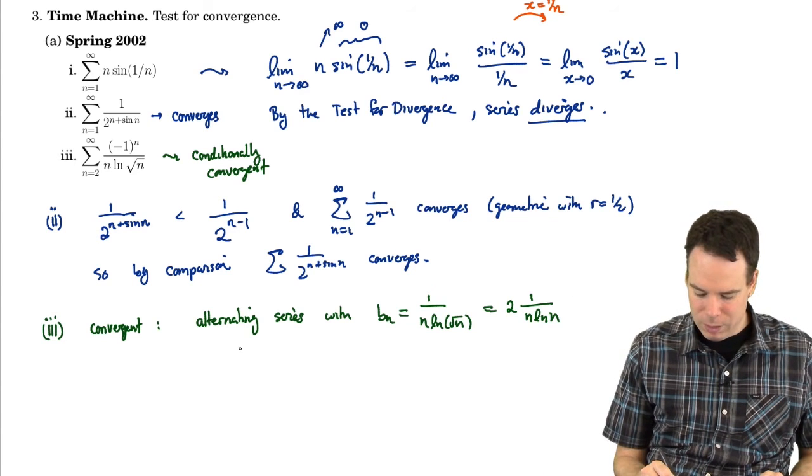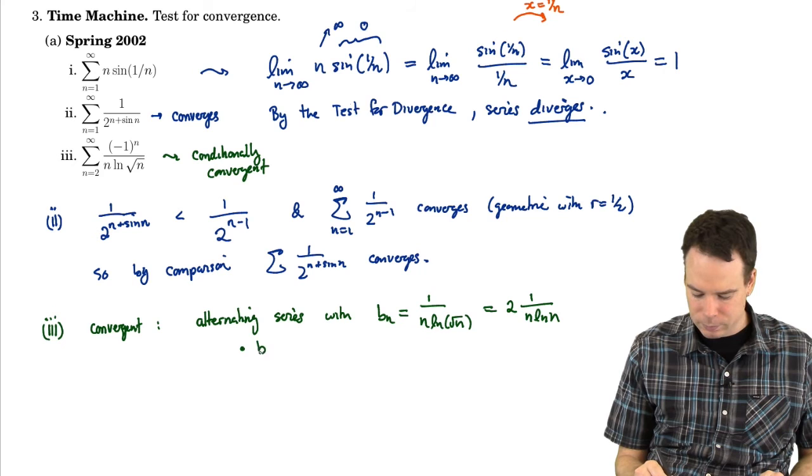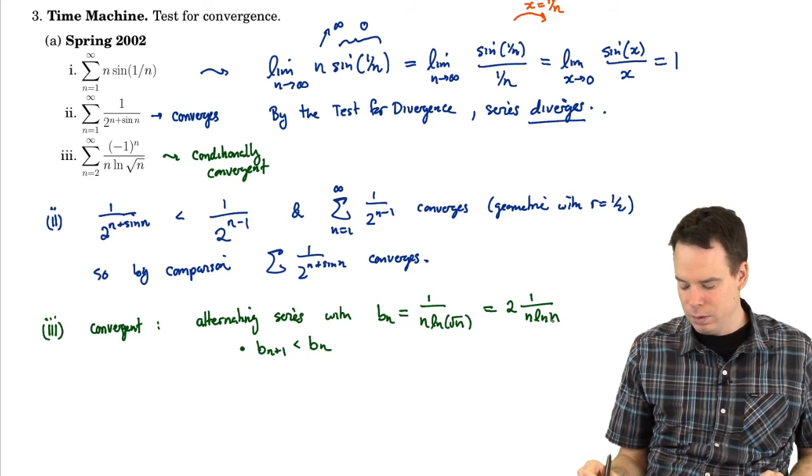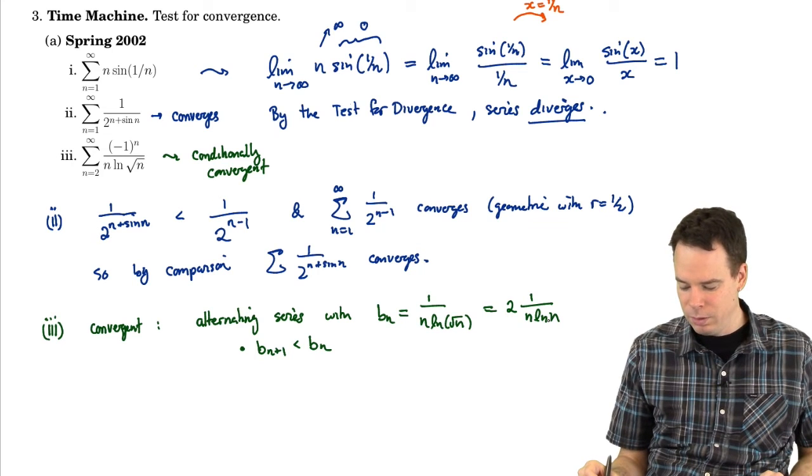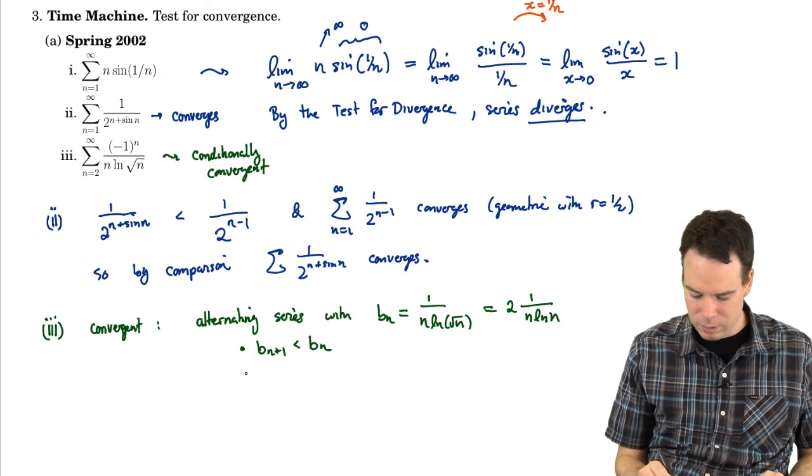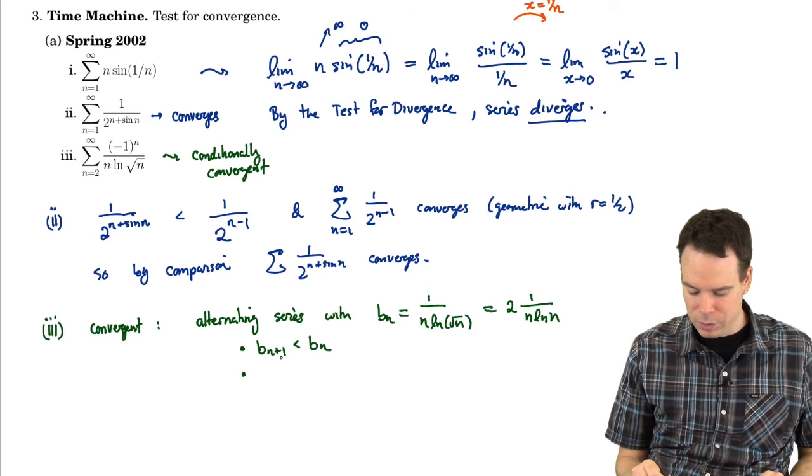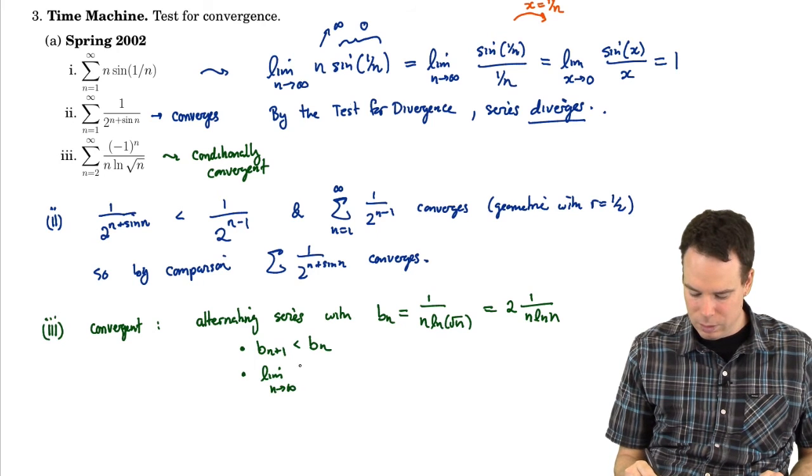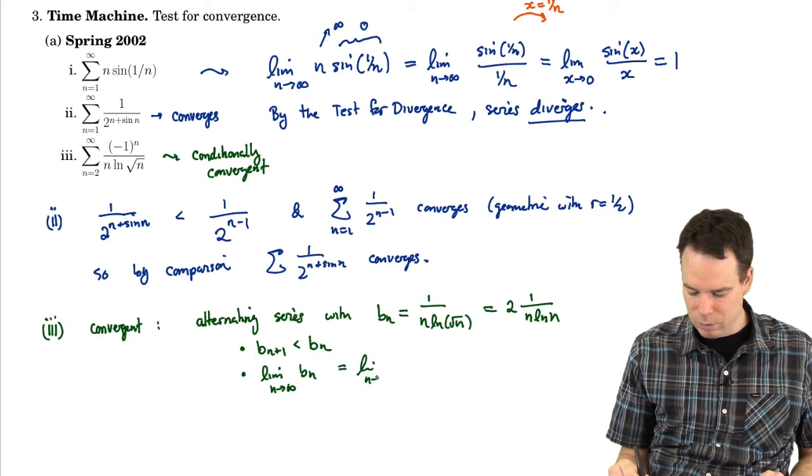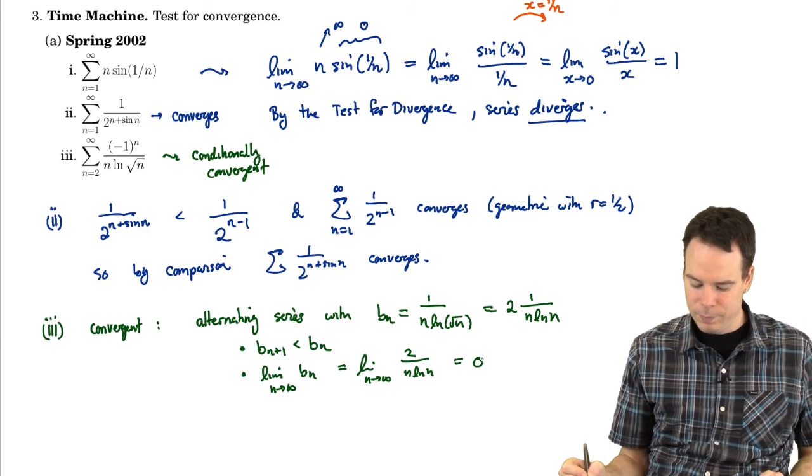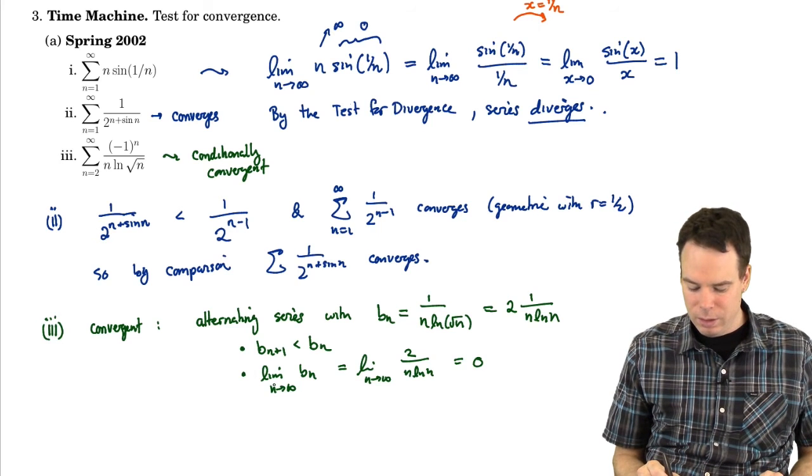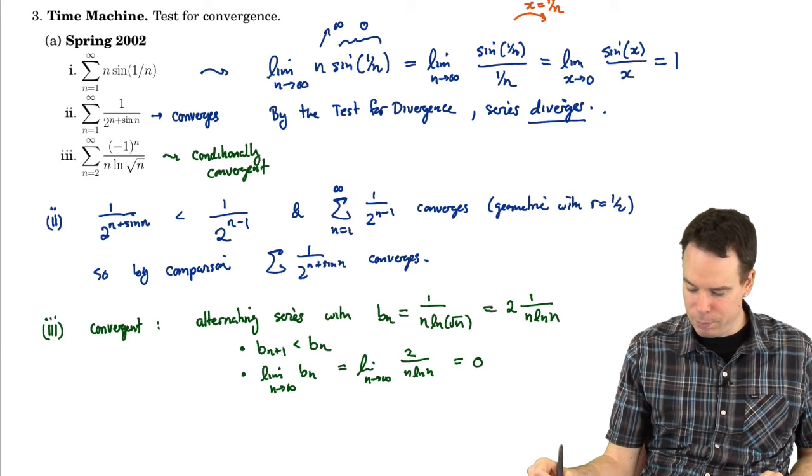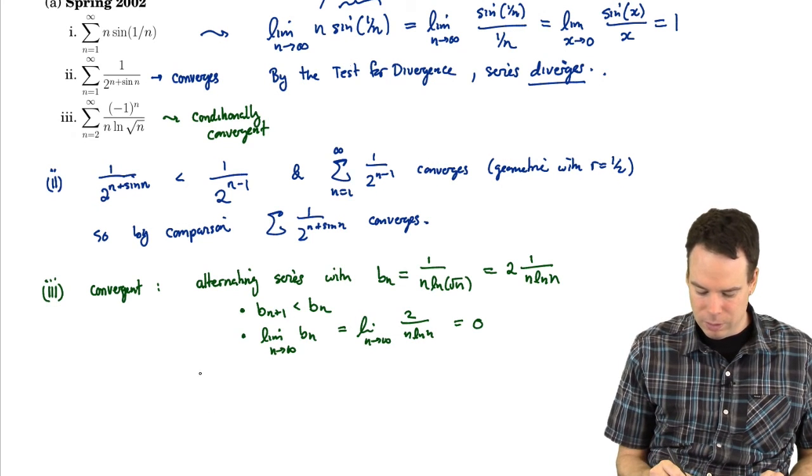Because log root n is the same as log of n to the 1 half, where the 1 half can come out front and get moved upstairs as a 2. So these are the bn's. And what do I notice about the bn's? The bn's are decreasing. If I increase the value of n, it's increasing the size of the denominator and therefore decreasing the reciprocal. So bn plus 1 is smaller than bn. And what about the limit as n goes to infinity of bn? Well, that's the limit as n goes to infinity of 2 over n log n, which is 0.